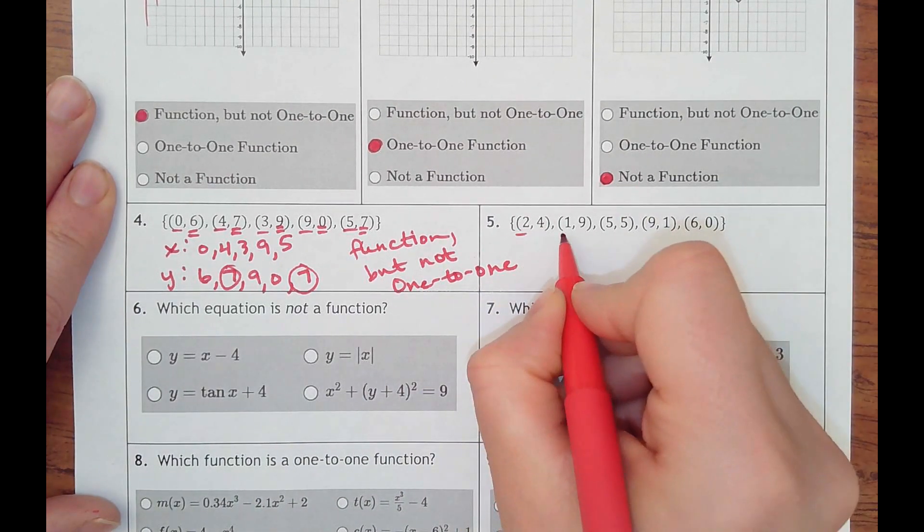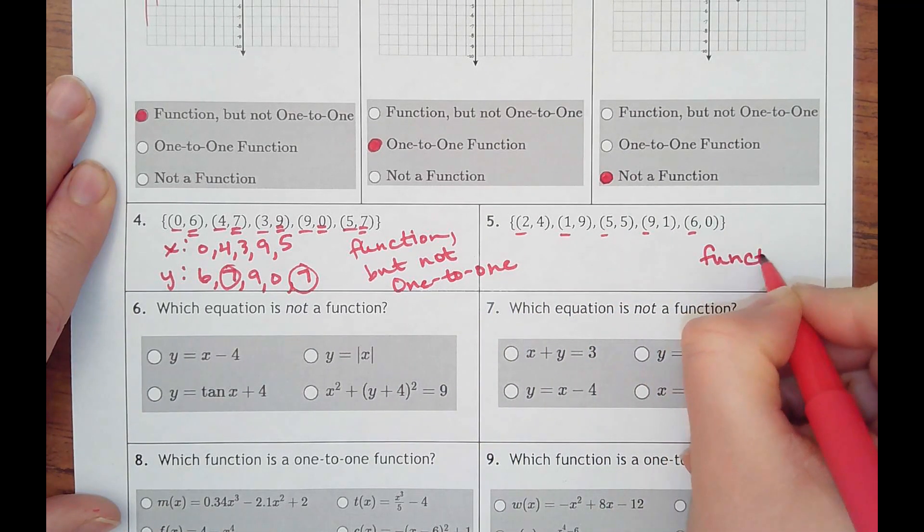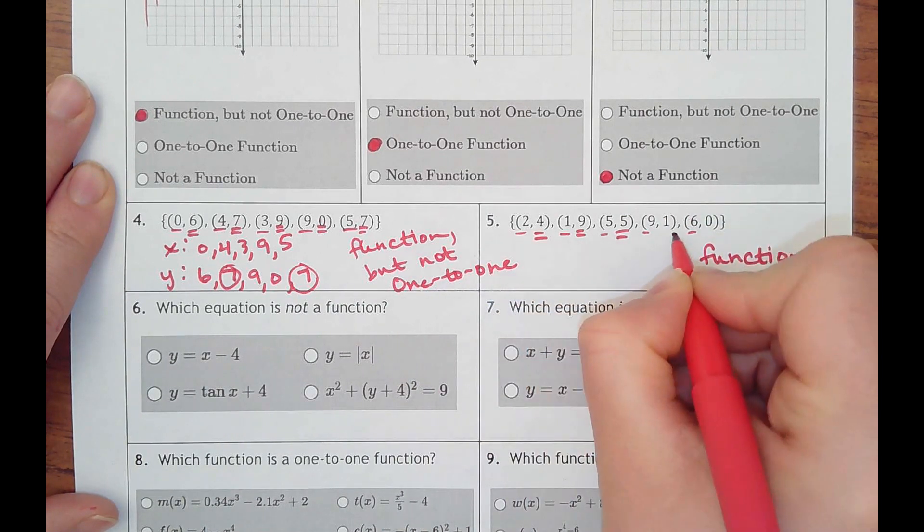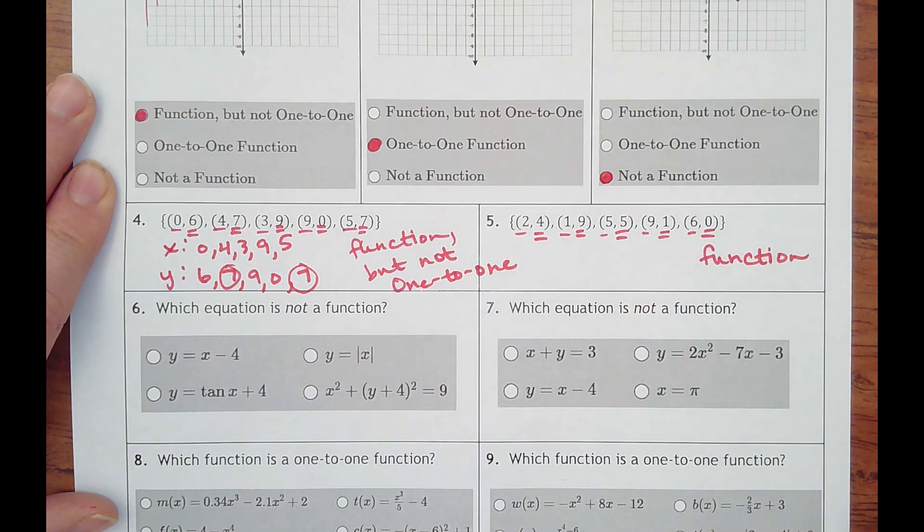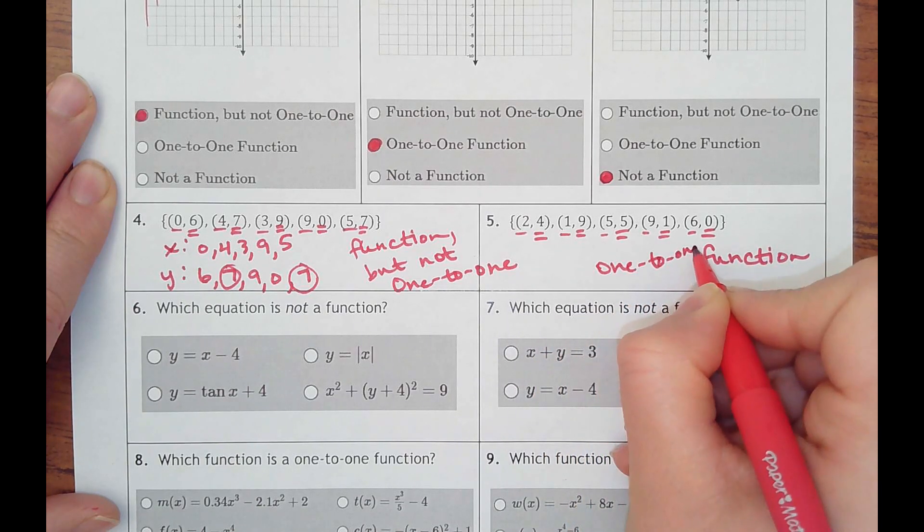Number 5, you can just look at it. There's 2, 1, 5, 9, 6. That is a function. And then 4, 9, 5, 1, 0. Those are all different, too. So it is a one-to-one function.